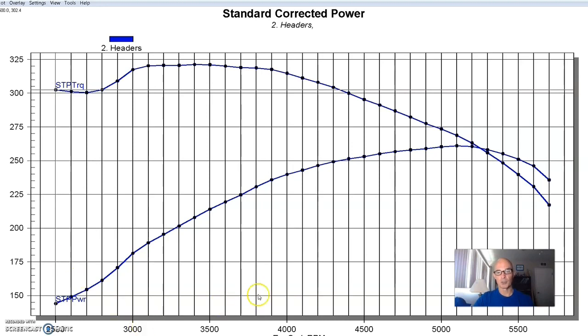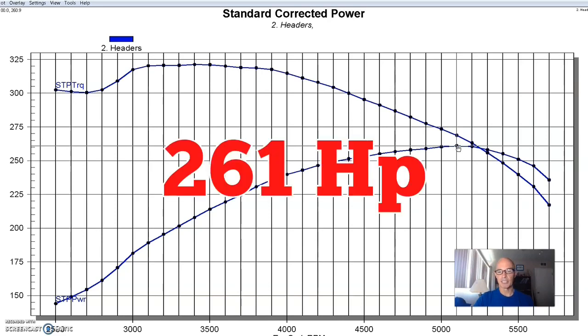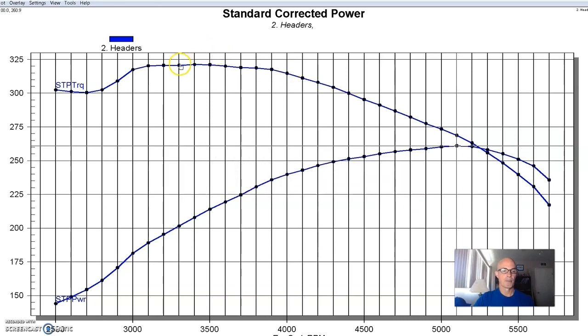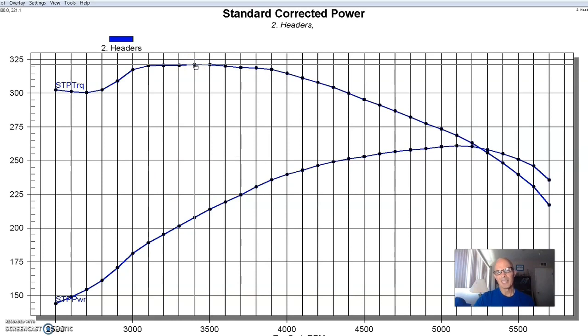This was our combination. This was our 302 with long tube headers on it, stock cam, stock head, stock HO upper and lower intake, stock throttle body. Run in this configuration, our nearly stock 5-liter produced 261 horsepower and 321 foot-pounds of torque. Kind of standard. We've run a ton of these stock 5-liters on there, and they're all kind of in this area in the 250 to 260 horsepower range.